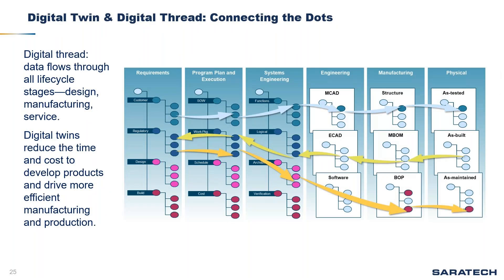Digital twin technology is one of the fastest growing concepts of Industry 4.0. The economic value of digital twins will vary widely depending on monetization models. Benefits include increased reliability, improved productivity, real-time remote monitoring, and increased product performance. It's all about connected data — from requirements, product planning, and systems engineering through manufacturing and all the way to the physical model.